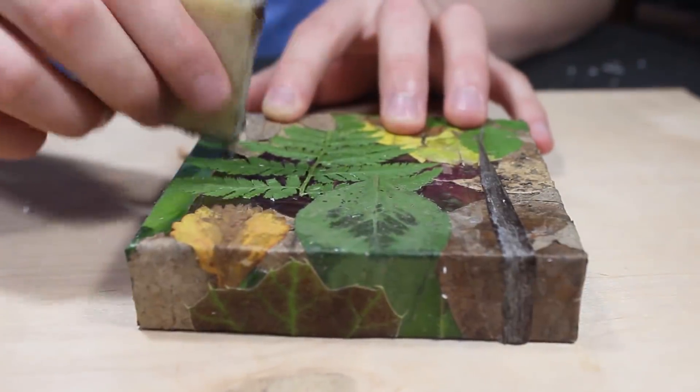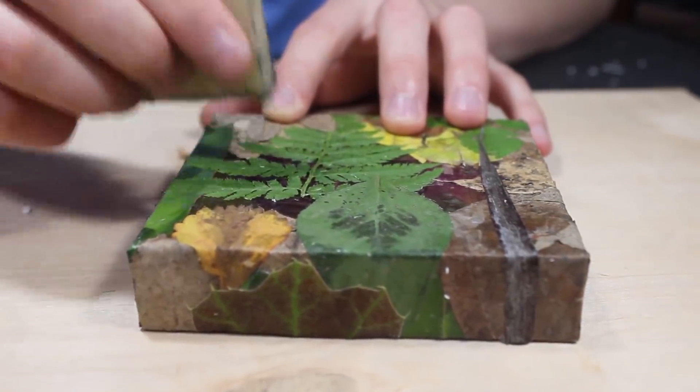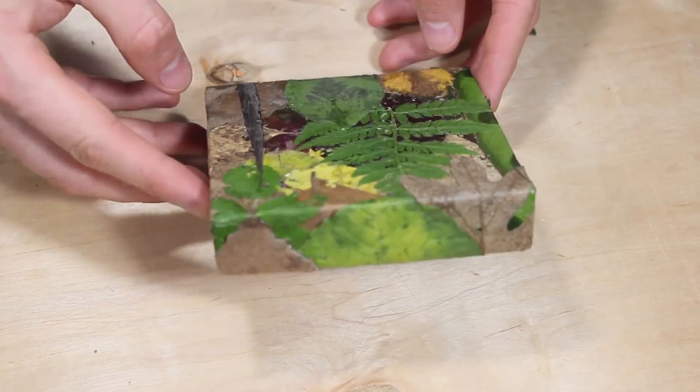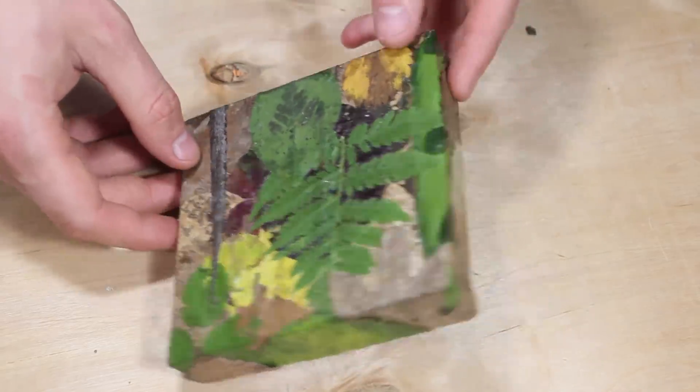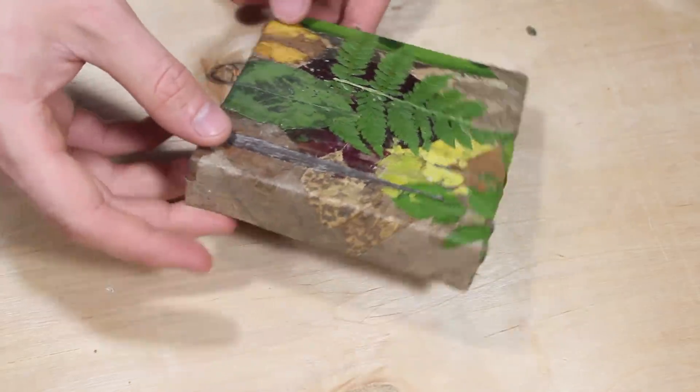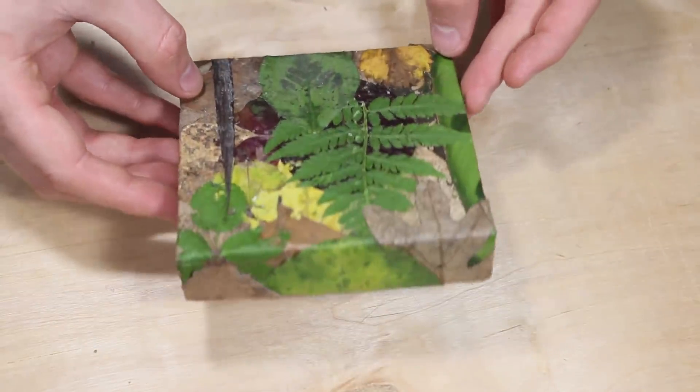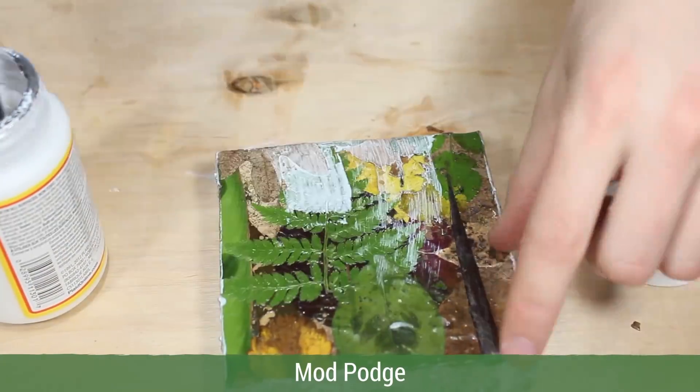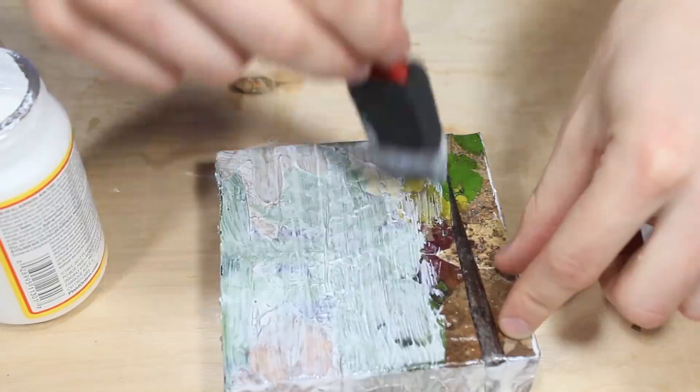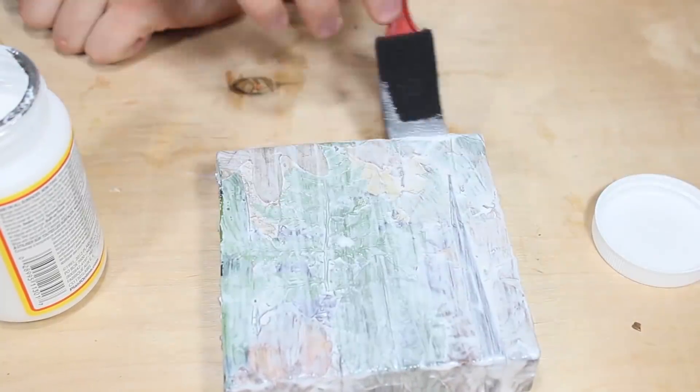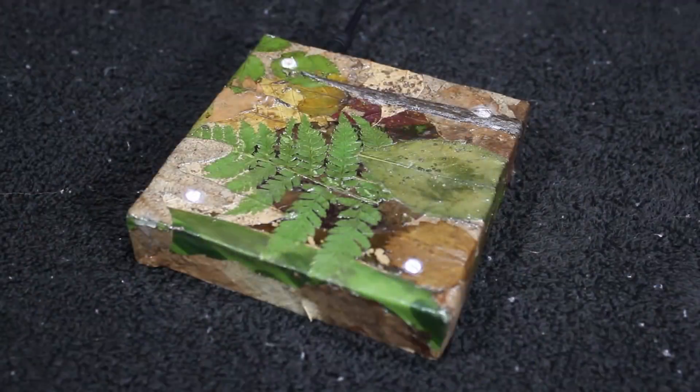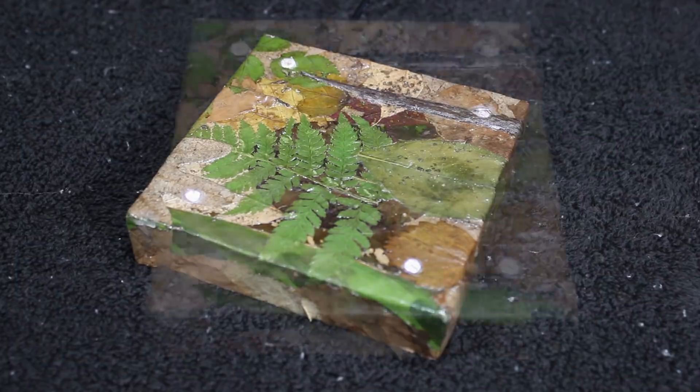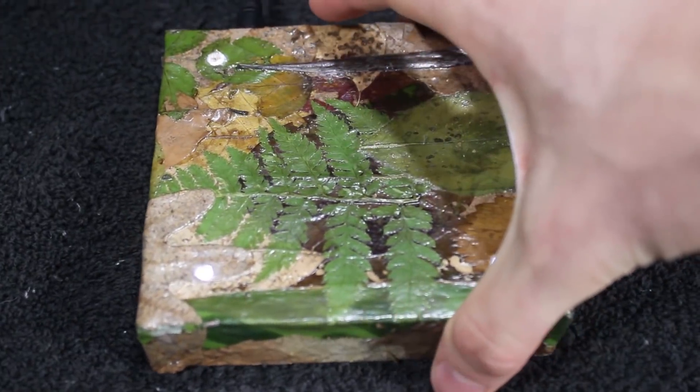After creating a design that I was pleased with, I used a rubber cement eraser to remove any excess cement. Then I applied two coats of matte Mod Podge to seal the leaves. Afterward I ended up with the final product that looks like this. I really like how it turned out. What do you think? I'm not sure if the leaves will stay green long term, but either way it will still look pretty cool.